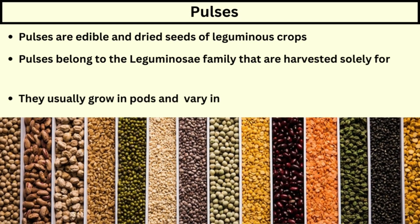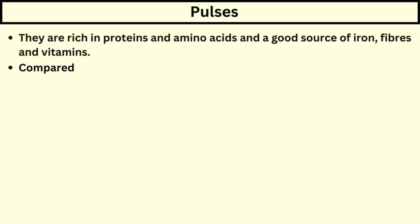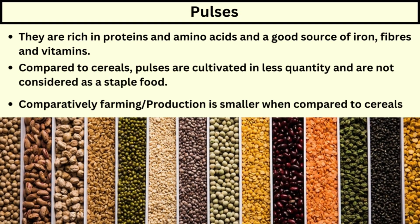Pulses are edible dry seeds of leguminous crops. They belong to the Leguminaceae family and are harvested solely for the purpose of obtaining dry seeds. They are usually grown in pods and vary in their color, shape, and size. They are rich in proteins and amino acids and are a good source of iron, fiber, and vitamins. Compared to cereals, pulses are cultivated in less quantity and are not considered a staple food; farming production of pulses is smaller when compared to cereals.